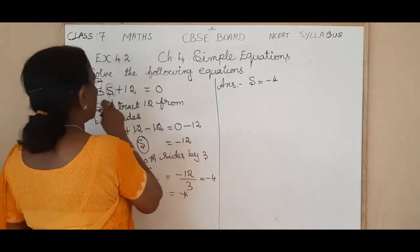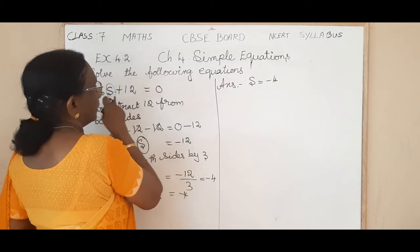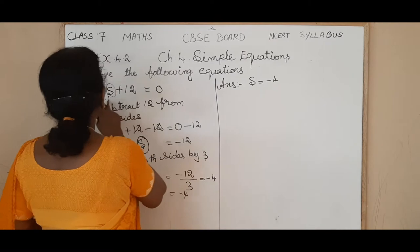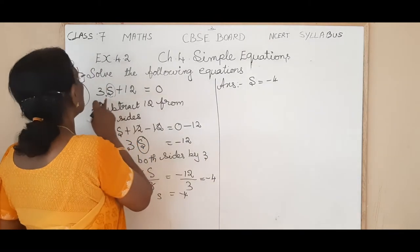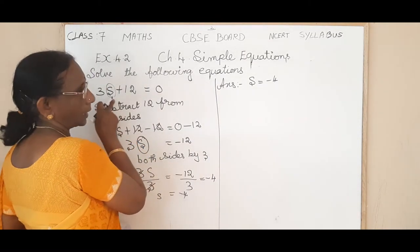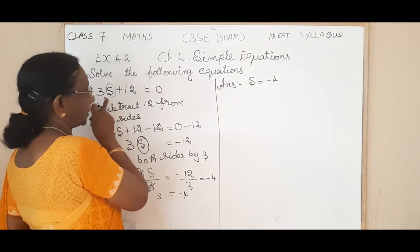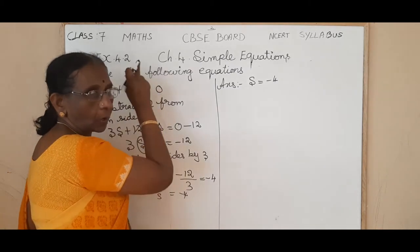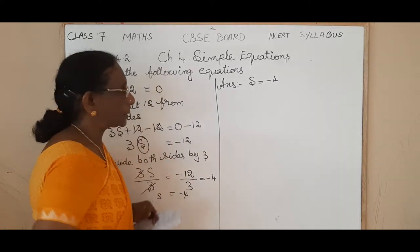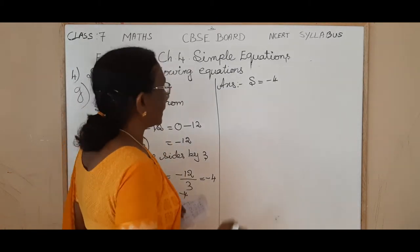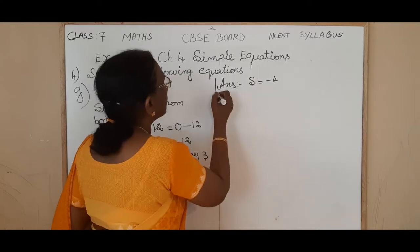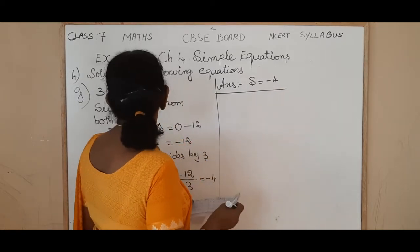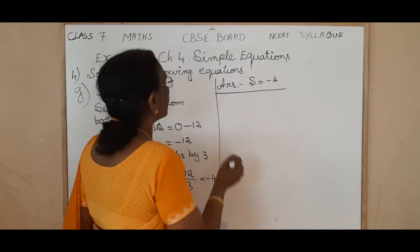The answer is S is equal to minus 4. You can substitute the value of S to verify: 3 into minus 4 gives minus 12, and minus 12 plus 12 gives 0. So your answer is correct.